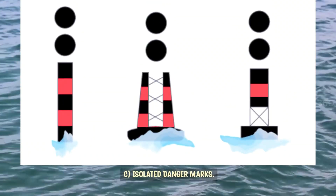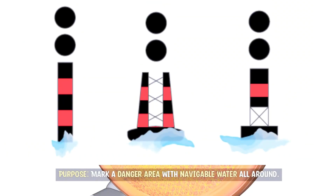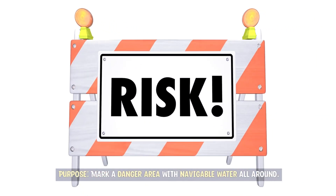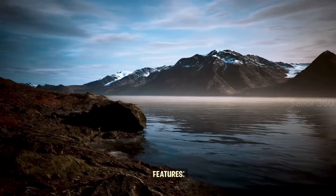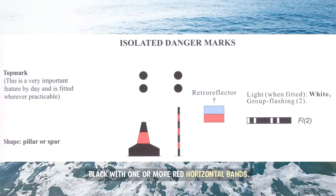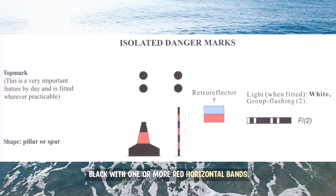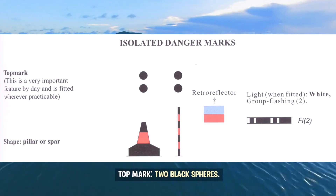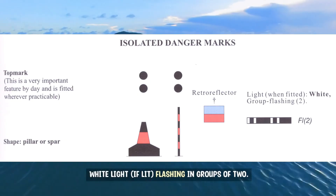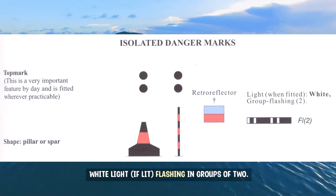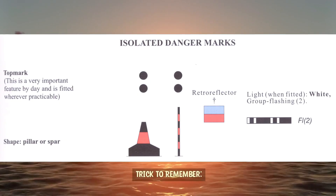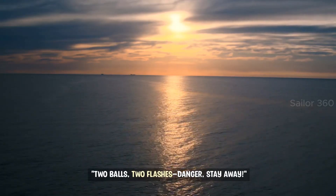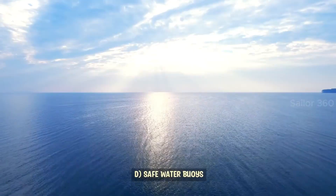Isolated danger marks. Purpose: mark a danger area with navigable water all around. Features: black with one or more red horizontal bands. Top mark: two black spheres. White light, if lit, flashing in groups of two. Trick to remember: two balls, two flashes — danger, stay away.